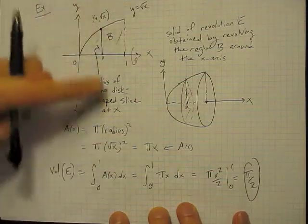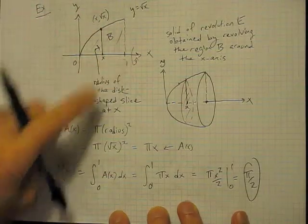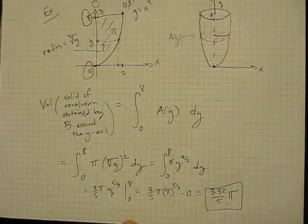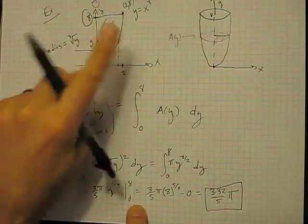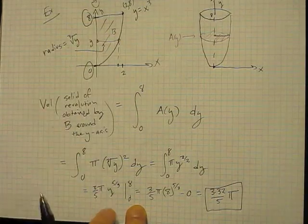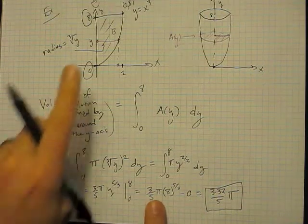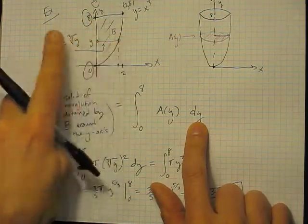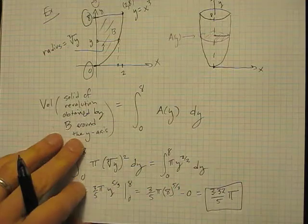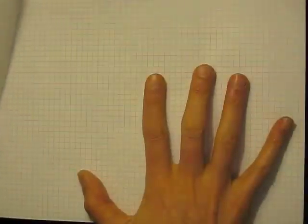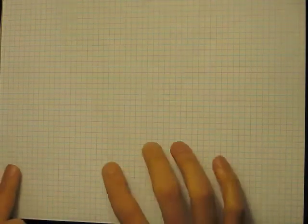I want you to compare these two examples. In the first, we took a planar region and revolved it around the x-axis, so we integrated with respect to x. In this example we revolved around the y-axis and integrated with respect to y. The technique is exactly the same — whether you use x or y just depends on which axis you're revolving around.